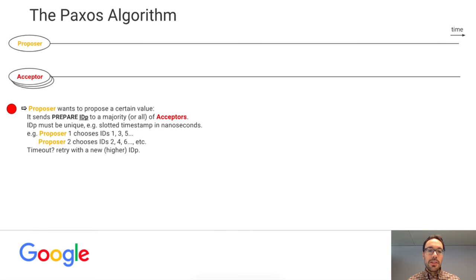Before we said the proposer would pick any value it wanted, but now there's extra logic: it checks if it has got any already-accepted value piggybacked in the promises. If it hadn't, it could pick any value. But given that it got a piggybacked value, it is forced to pick the value with the highest accepted ID — in this case, five cut — so it must send accept_request(6, cut). The rest is the same: acceptors receive accept_request(6, cut), they didn't promise to ignore it, so they send accept(6, cut) to the proposer and learners, who figure out what the consensus was. This is the whole Paxos algorithm.